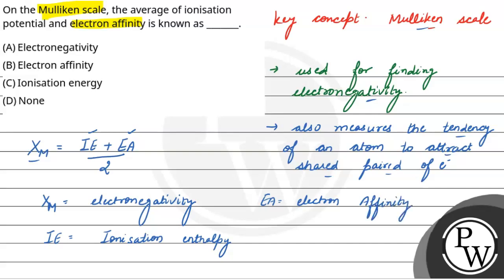So the correct option is option A — the average of ionization enthalpy and electron affinity on the Mulliken scale is electronegativity. I hope you understood. All the best!